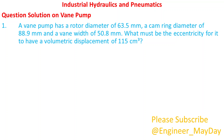Let's tackle this question. A vane pump has a rotor diameter of 63.5 millimeters, a cam ring diameter of 88.9 millimeters, and a vane width of 50.8 millimeters. What must be the eccentricity for it to have a volumetric displacement of 115 cubic centimeters?